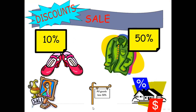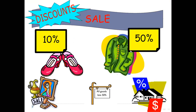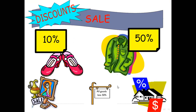We can see percentages all around us — for example, we see discounts on sale signs at stores: 50 percent off, 10 percent off. All goods listed at 50 percent, or a house price reduced by 70 percent. We see percentages a lot in malls when we go shopping.